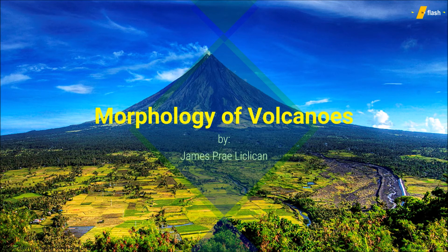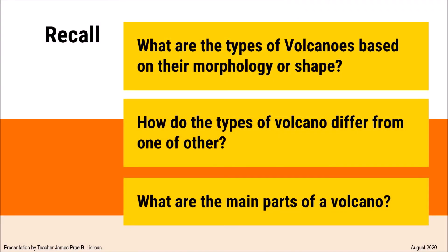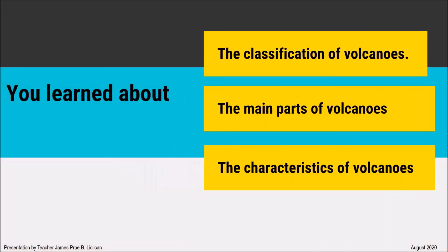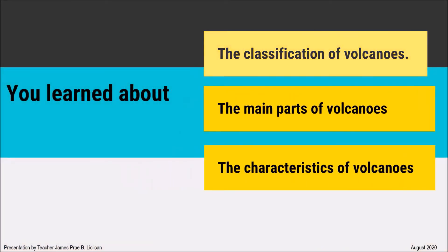Let's check what you've learned. What are the types of volcanoes based on their morphology or shape? How do the types of volcanoes differ from one another? And what are the main parts of a volcano? If you were able to answer those, then you successfully learned about the classification of volcanoes, the main parts of volcanoes, and the characteristics of volcanoes.